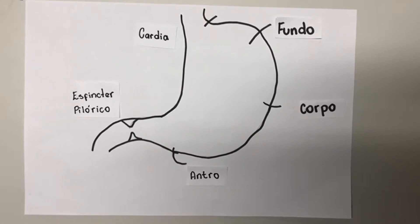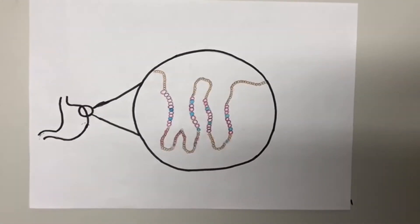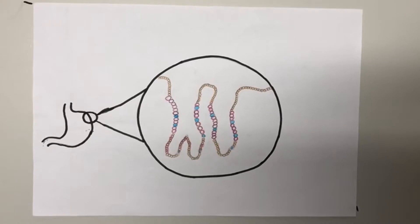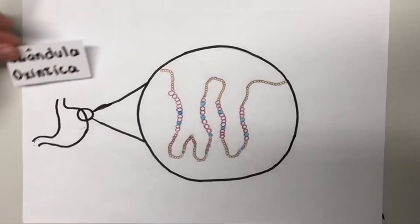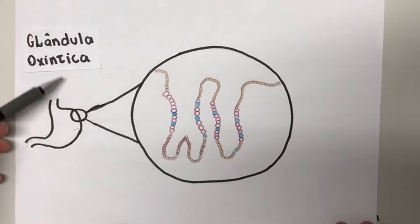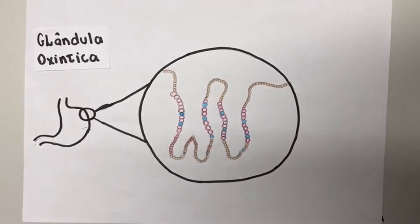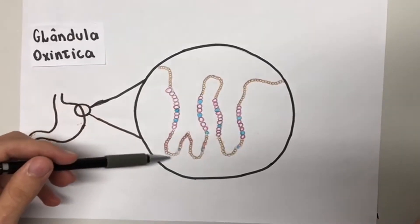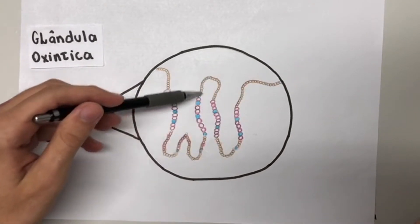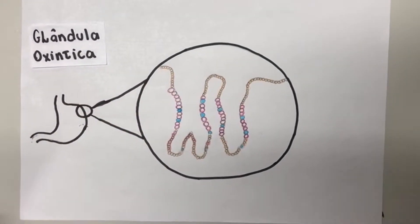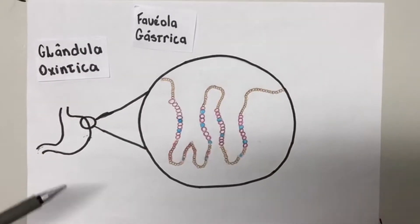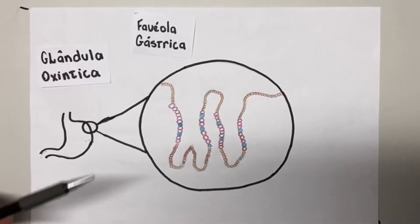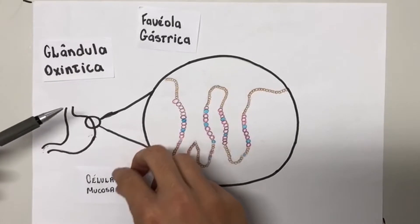As células secretoras ficam dentro de glândulas. Na região do fundo e do corpo do estômago encontra-se a glândula oxíntica, ou glândula gástrica. Dentro dela, na fóvea gástrica, há apenas células do epitélio superficial. À medida que se aprofunda na mucosa, encontram-se as células da glândula propriamente dita: as células mucosas, que secretam muco rico em bicarbonato.